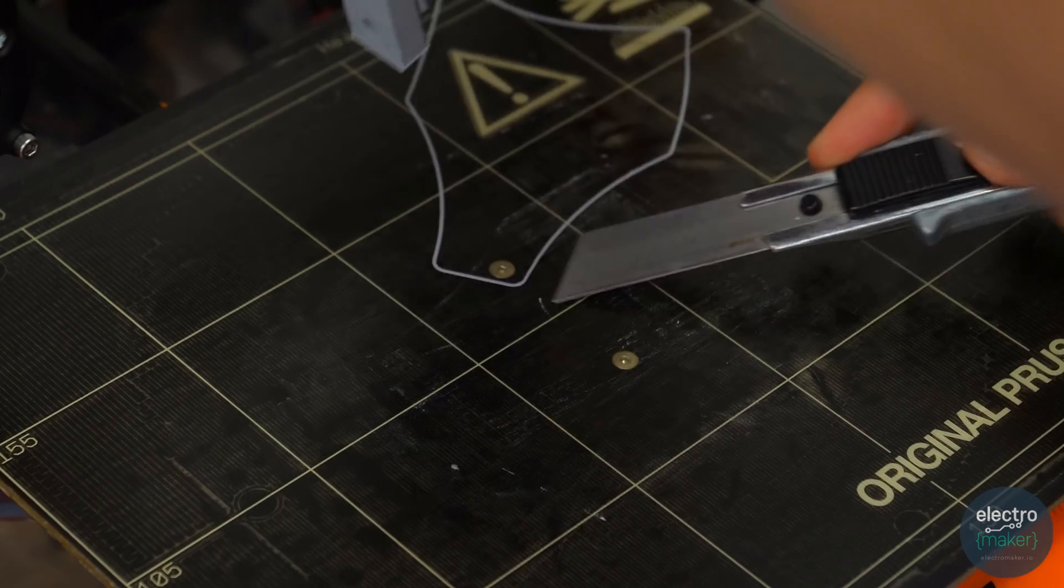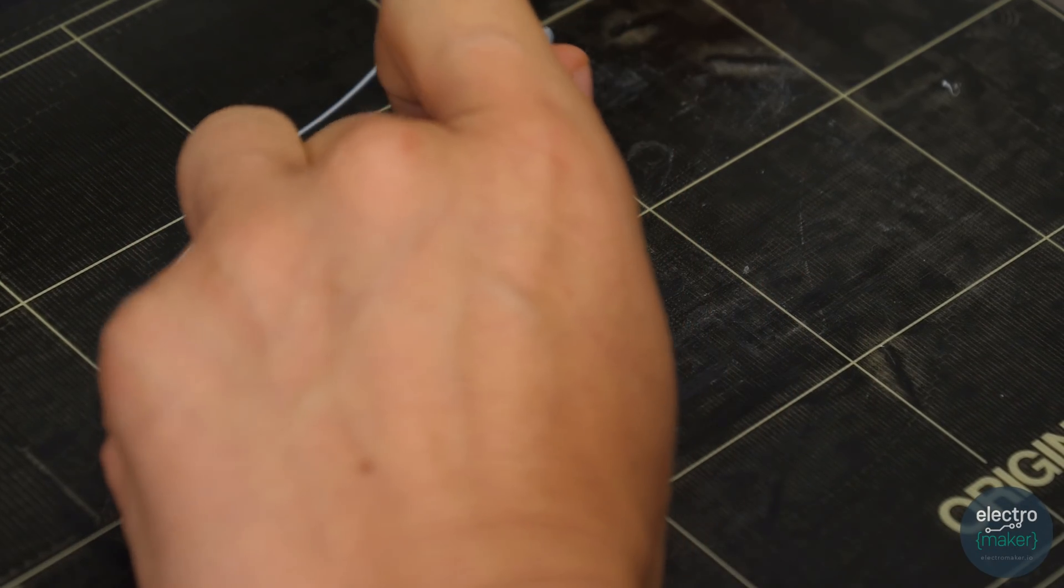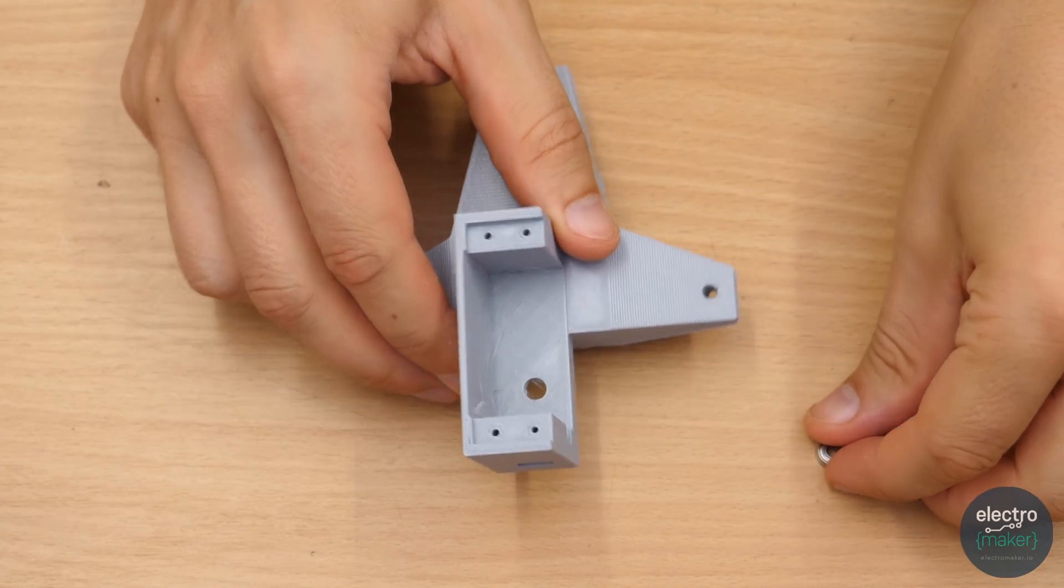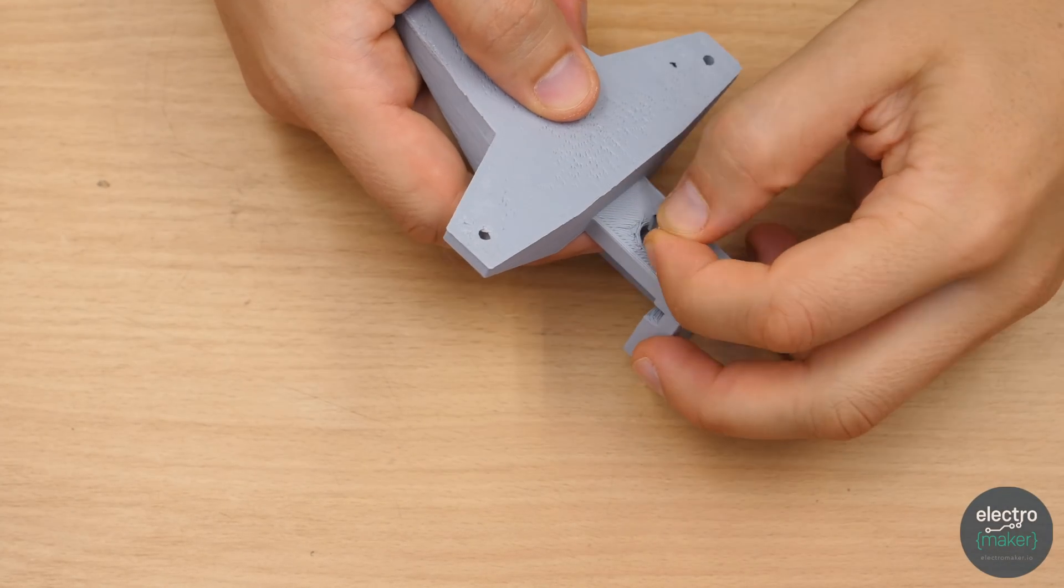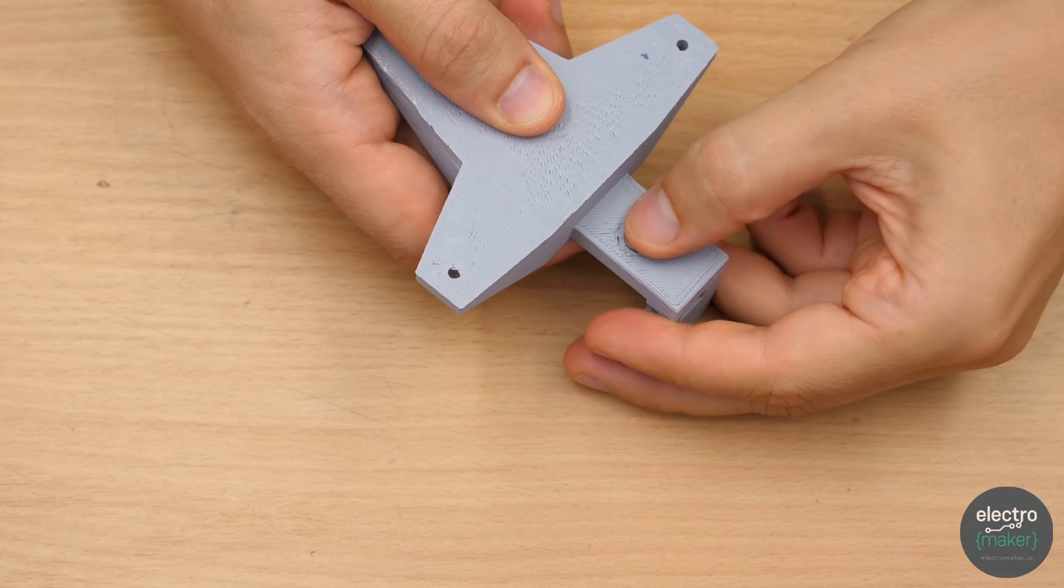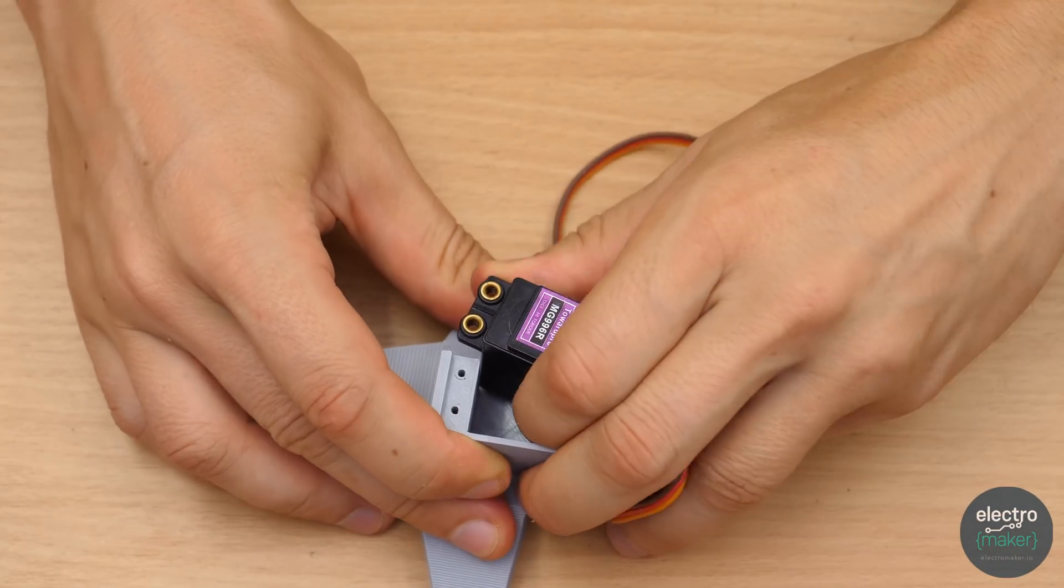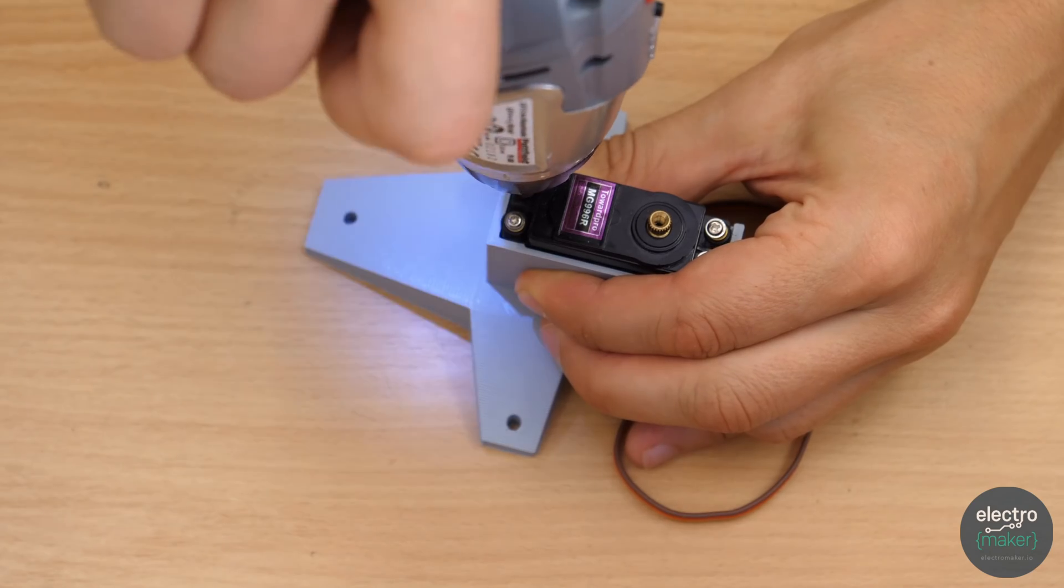After all the 3D printing is done it's finally time to assemble the robot arm. The ball bearings are press fitted in place. The opening on the other side leaves enough clearance for it to rotate freely. The servo fits snugly in place and can be screwed tight.